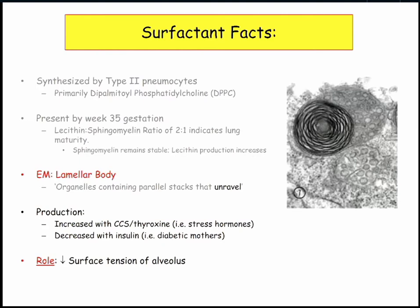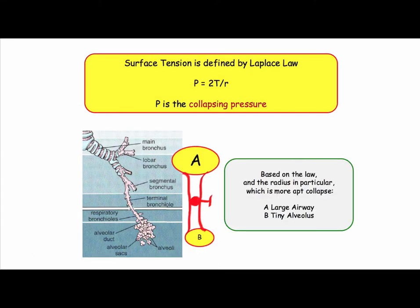How does surfactant work? It decreases surface tension of the alveoli — that's the mechanism. This is a classic question testing your understanding of surfactant and collapsing pressures. Illustrated are two spheres: A the larger, B the smaller, with a stopcock interposed. If you open that valve, which sphere is more apt to collapse? Based on the law of Laplace, the sphere with the smaller radius faces the greater collapsing pressure — so the answer is B. The tiny alveolus faces disproportionately high collapsing pressures, and this would be their permanent fate were it not for surfactant, which renders the surface tension in the numerator to a lower value, thereby reducing the collapsing pressure.